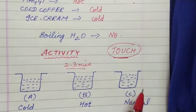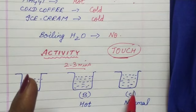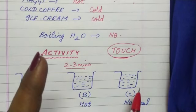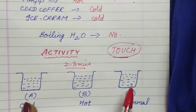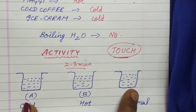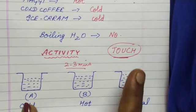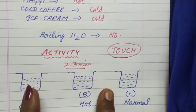Now, see your left hand will tell you that the water in container C is hot. Why? Because your hand was in cold water. So your left hand will tell you that this water is hot, whereas your right hand will tell you that this water is cold. Why? Because your right hand was in hot water and your left hand was in cold water.